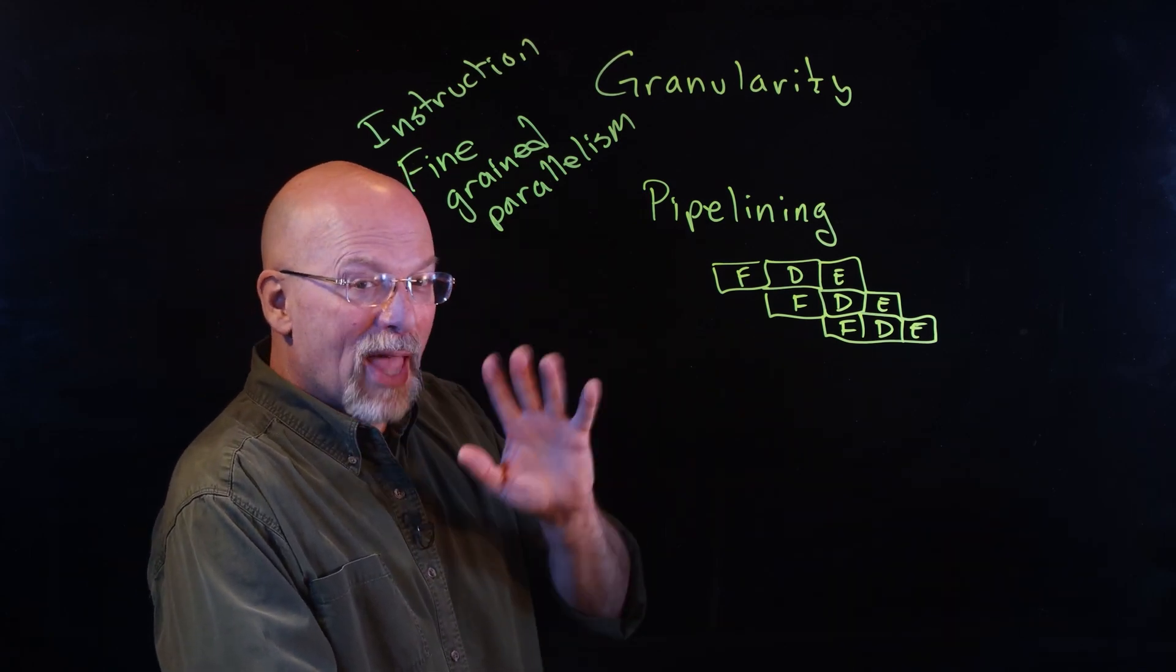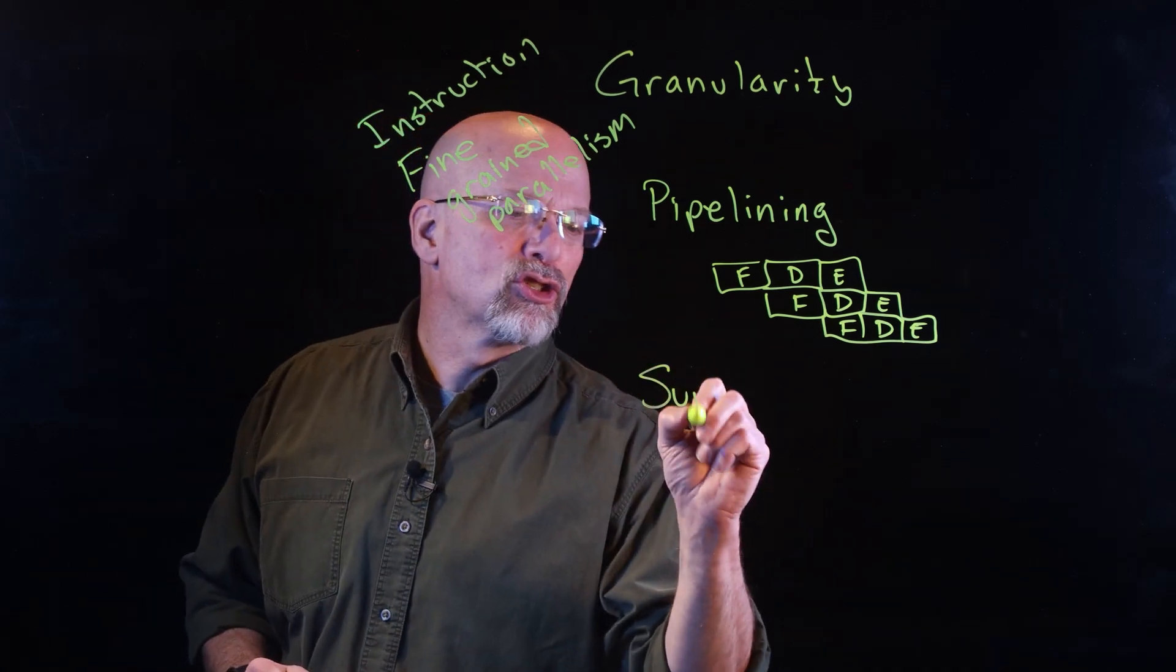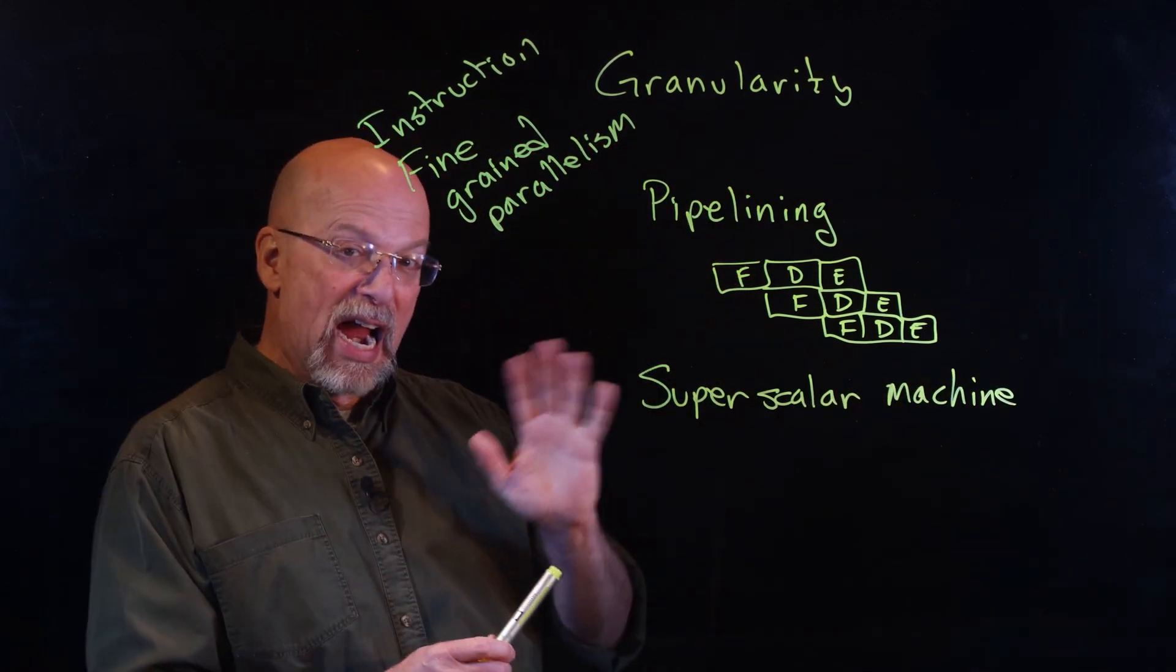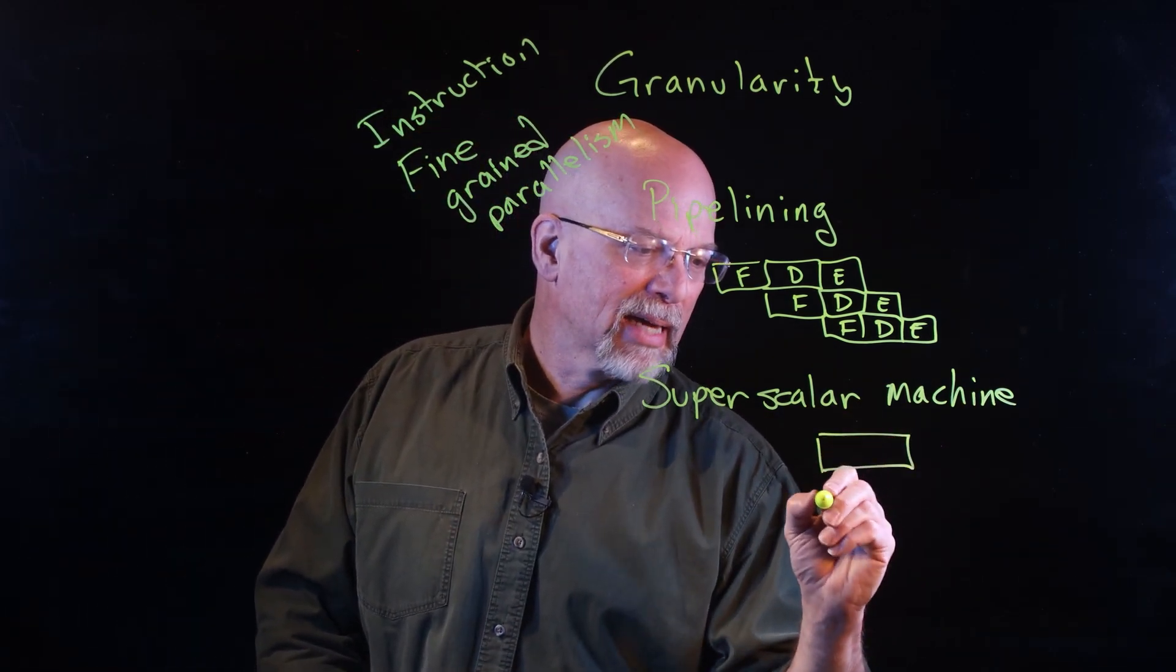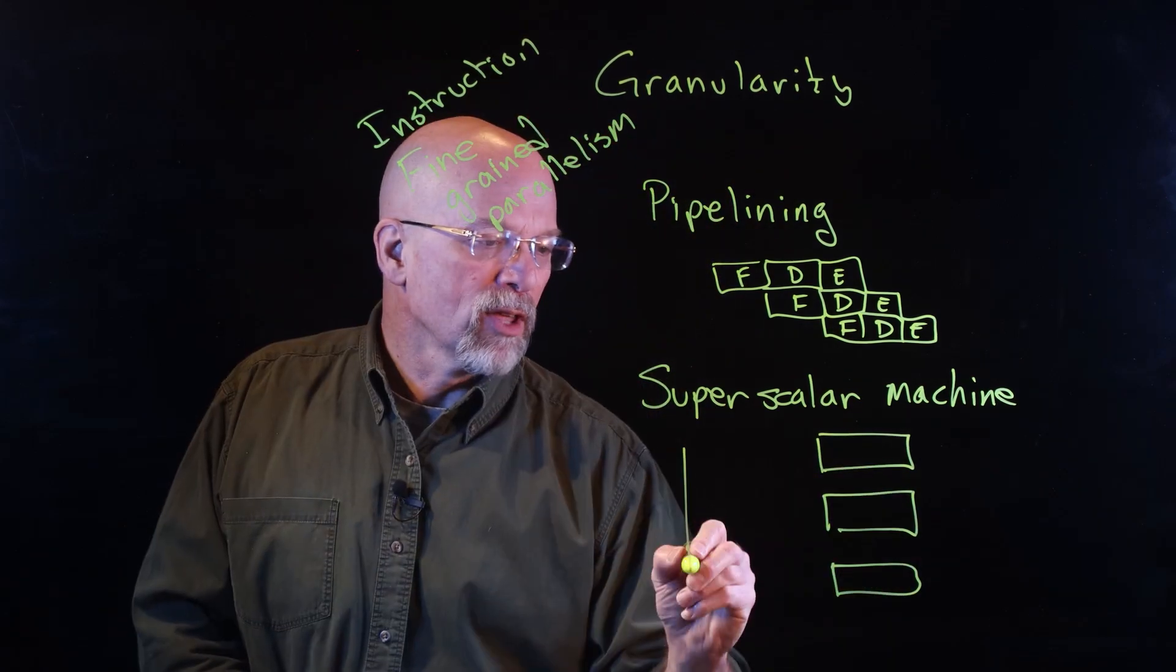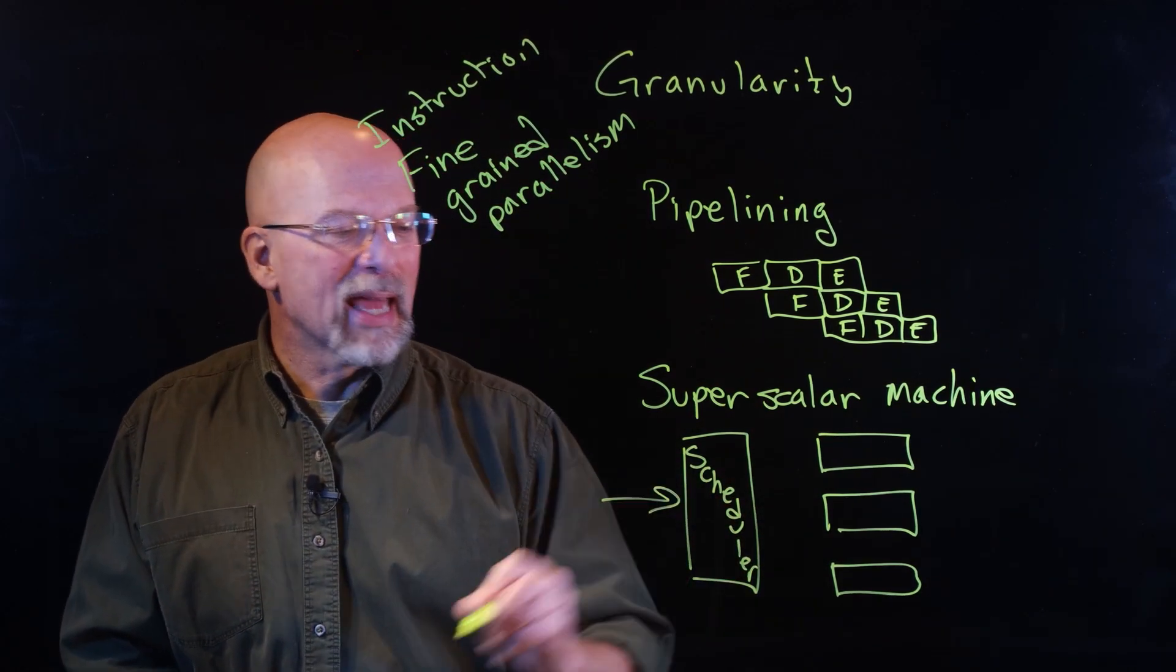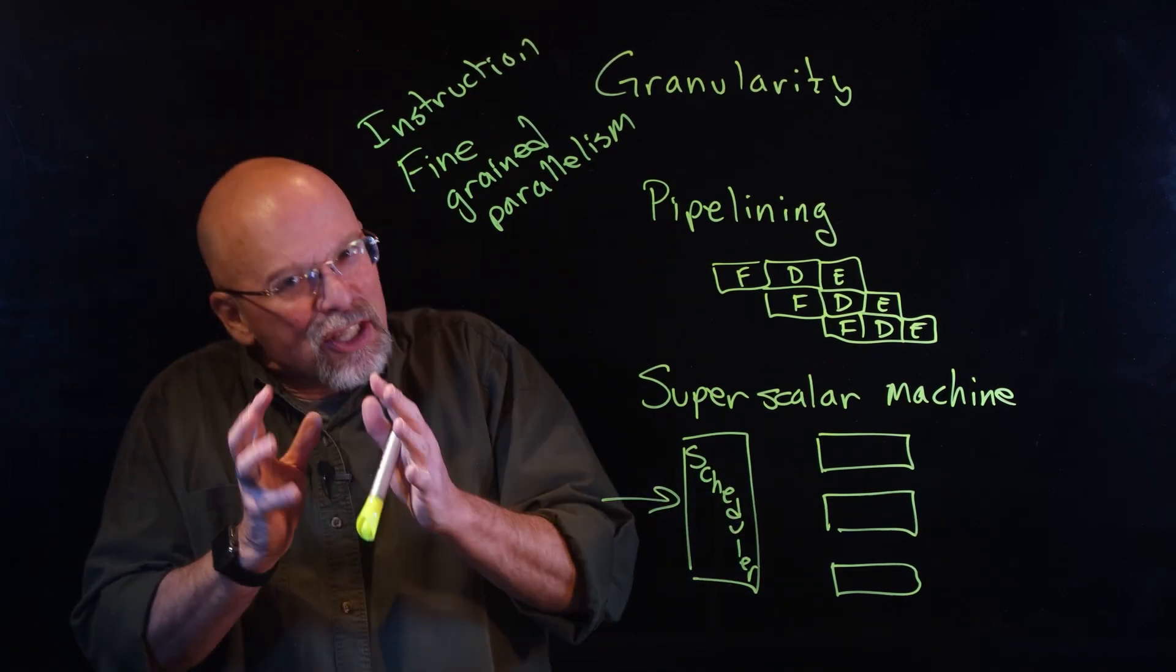There are other types too. We haven't talked about it in this series yet, but there's something called a super scalar machine. A super scalar machine creates multiple execution units. You've got some sort of a scheduler here. So you get instructions, and it can bring in from the cache multiple instructions.